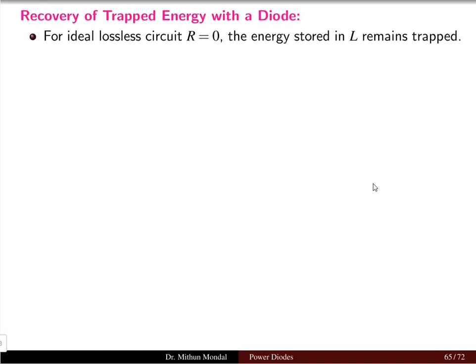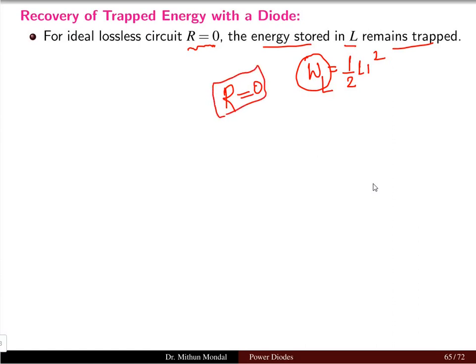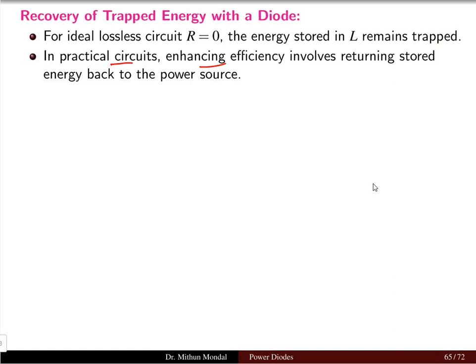When the circuit is lossless, that is the resistance is zero, then the energy which is stored in the inductor remains trapped. We know that the energy present in the inductor is given by half LI². Here, the energy present in this inductor will not dissipate if the resistance is zero. Some amount of resistance is required so that the energy may dissipate through the resistor. In practical circuits, enhancing the efficiency involves returning stored energy back to the power source.